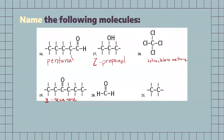Next one, we have 1 carbon, and this is going to be an aldehyde. So, our molecule would be called methanal. A simple one: we have 2 carbon chains fully saturated with hydrogens, so it's just a simple alkane — ethane.